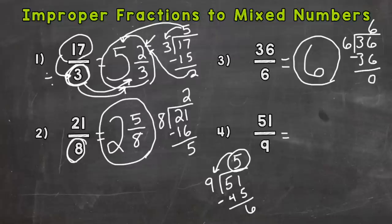So we get 5 wholes. We have a remainder of 6. And we keep the denominator the same. So 5 and 6 ninths. Now that 6 ninths can actually be simplified because we have a common factor between 6 and 9 other than 1.